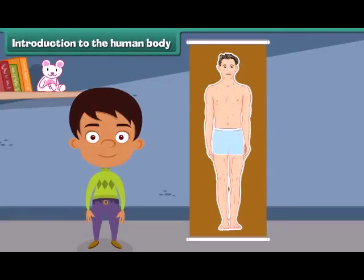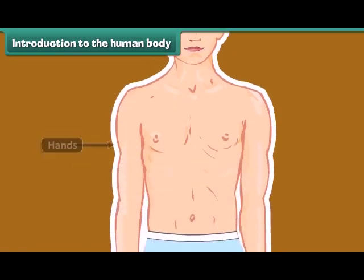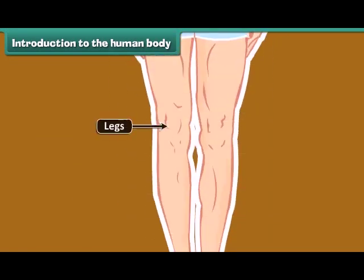Hello all! Can anybody tell me the names of various parts of our body? Great! Let's know more. The main parts of our body are head, face, neck, hands, stomach and legs.